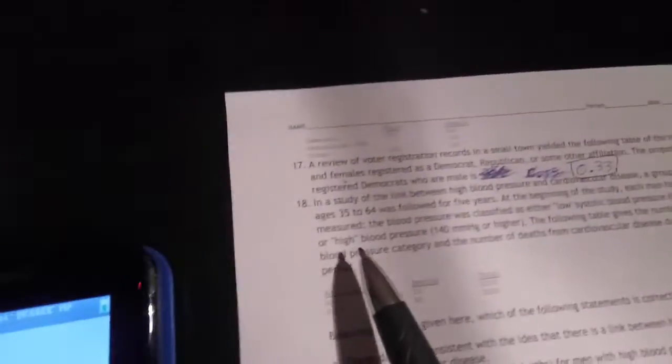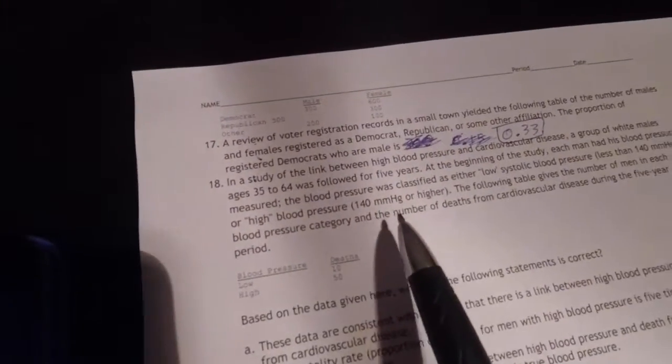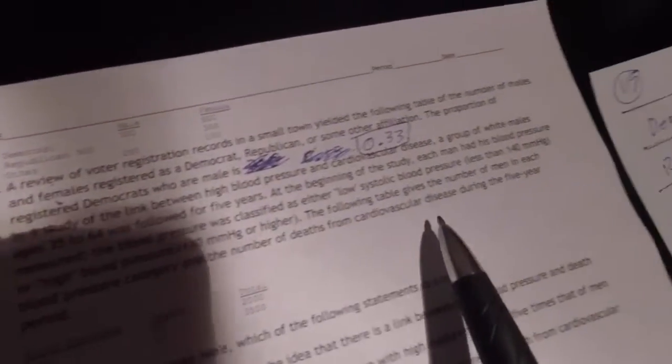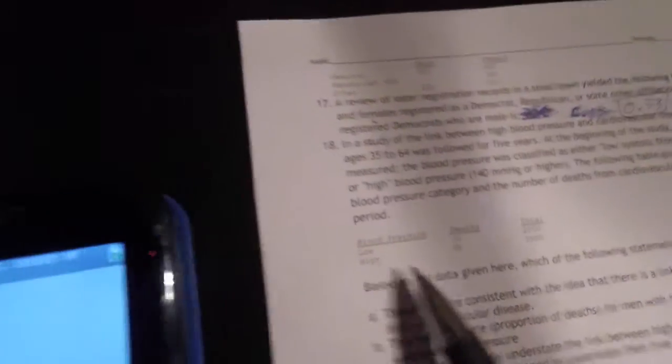The blood pressure was classified as either low systolic blood pressure, less than 140 mmHg, or high blood pressure, 140 mmHg or higher. The following table gives the number of men in each blood pressure category and the number of deaths from cardiovascular disease during the five-year period. We have low and high.